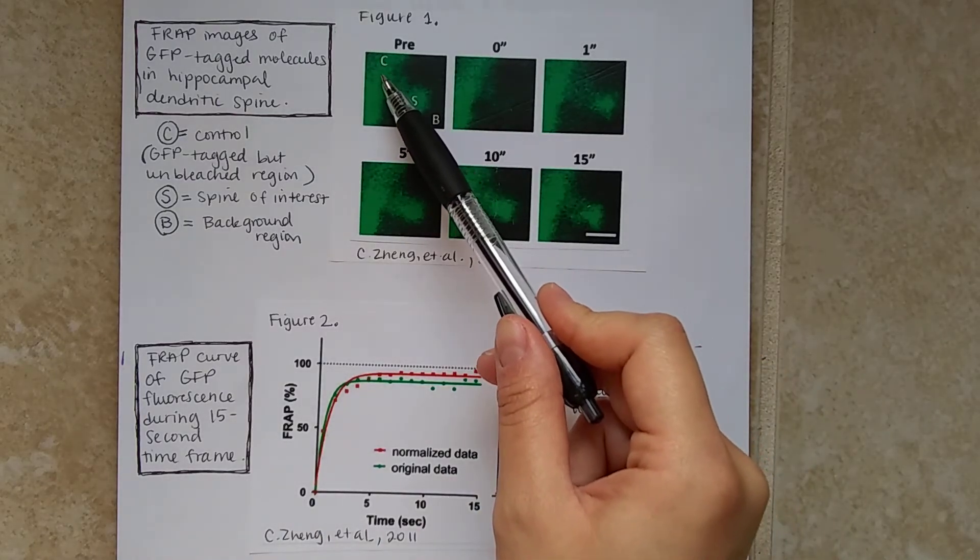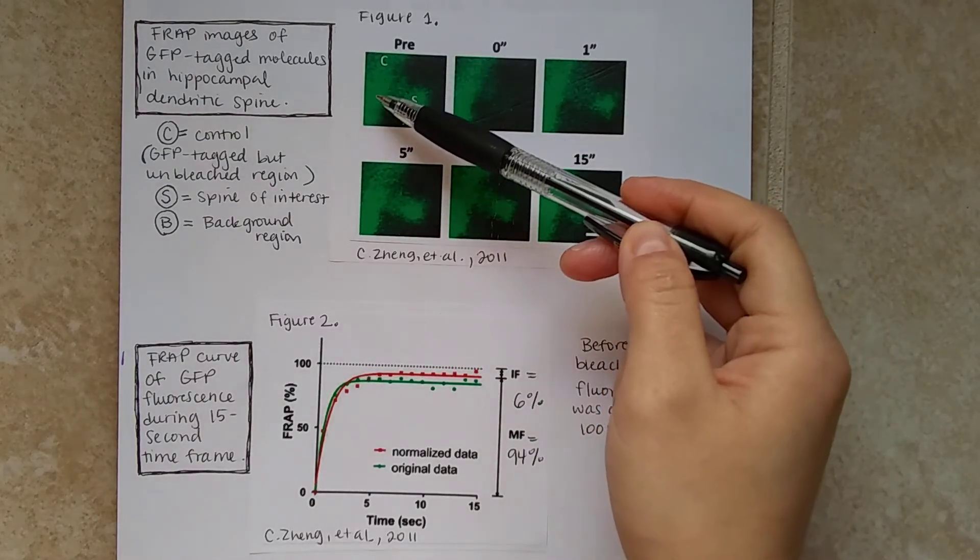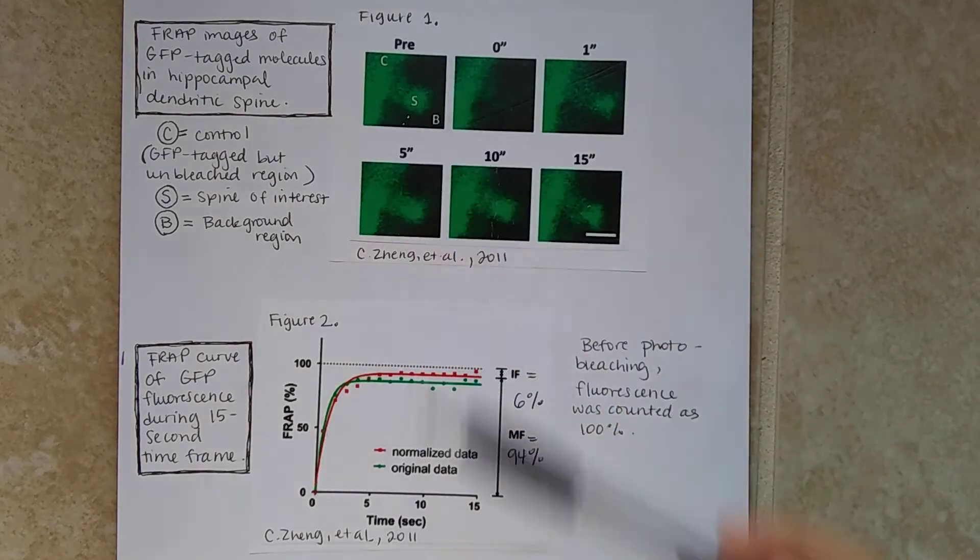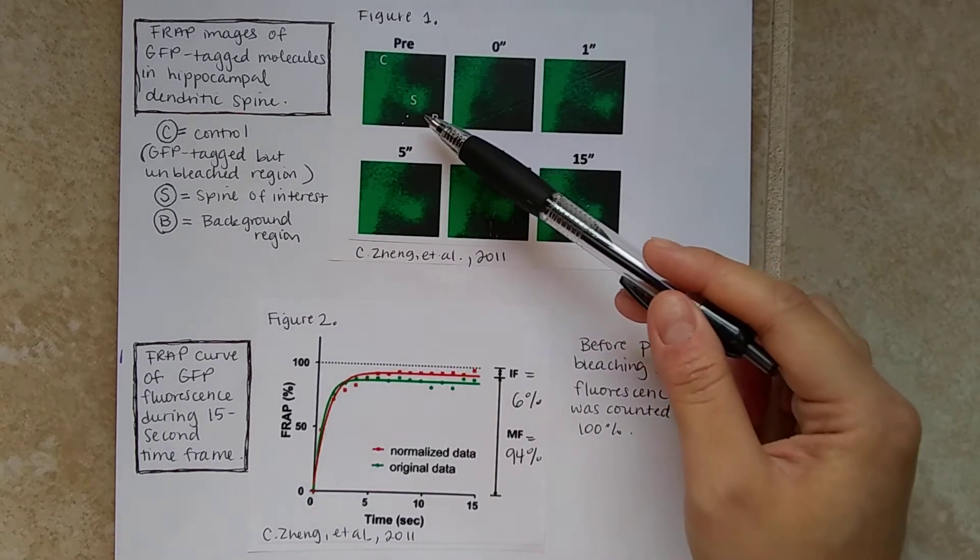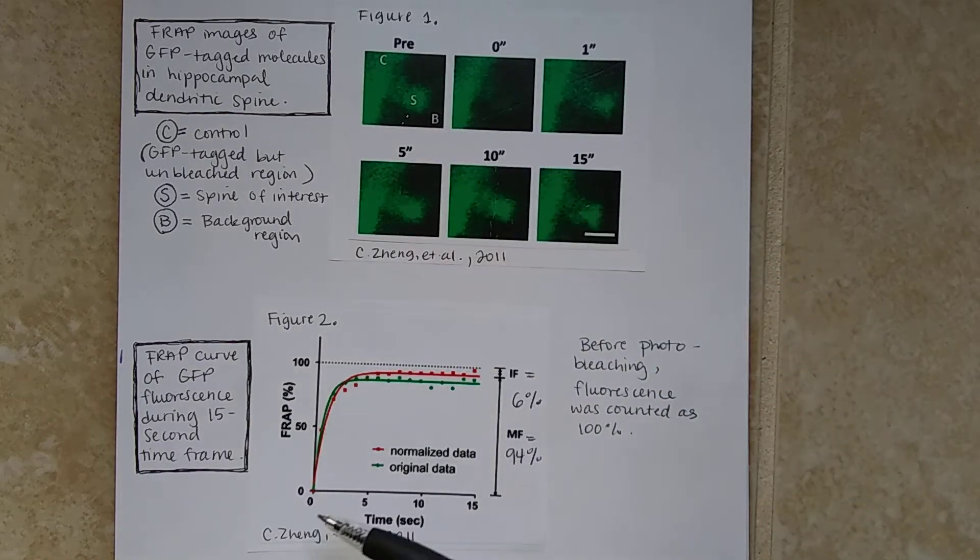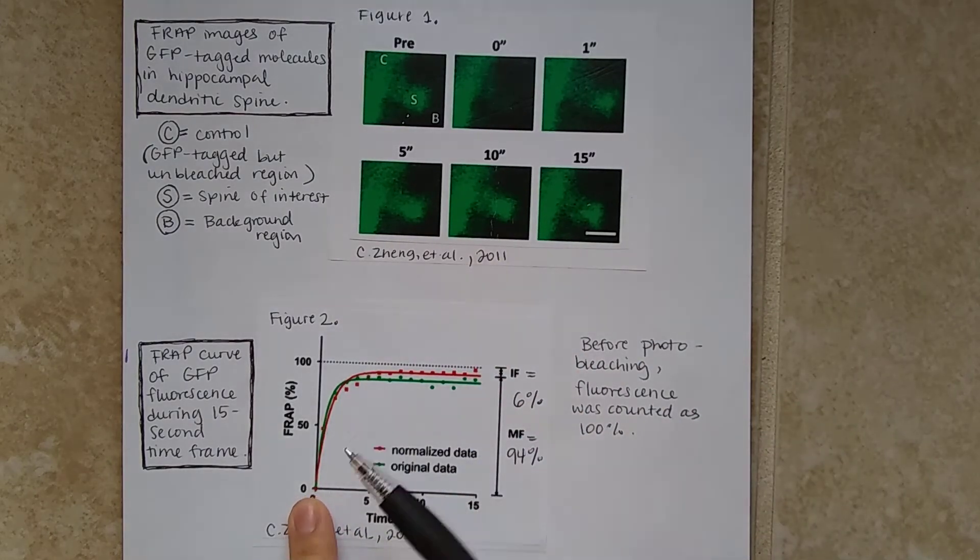This is the spine, the C is referred to as the control, which is the GFP tagged, but unbleached region. So this region will be expressing fluorescence. And this is what we'll be looking at, so at time zero, and let's refer to the curve so that way I can talk about both.